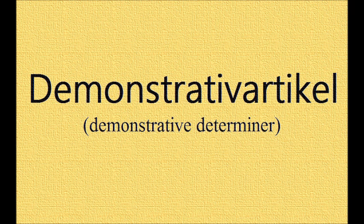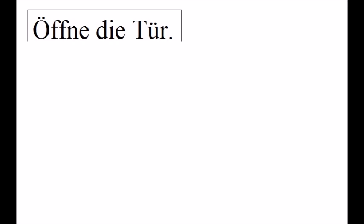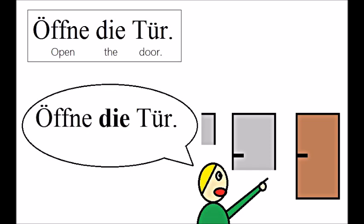The best example for this in English is 'this' and 'that'. In German, the definite article — der, die, das, den, etc. — can change its meaning from 'the' to 'that' if you emphasize it. For example, 'öffne die Tür' means 'open the door', but if you point to the door to show which one you mean, then you would say 'öffne die Tür' meaning 'open that door'. In most cases, 'this' or 'that' is simply the emphasized definite article in German.